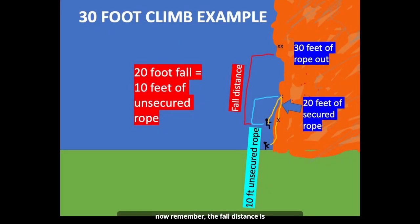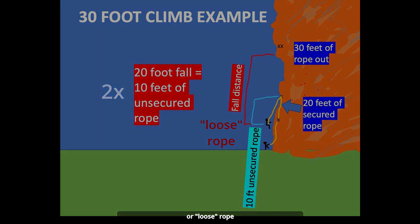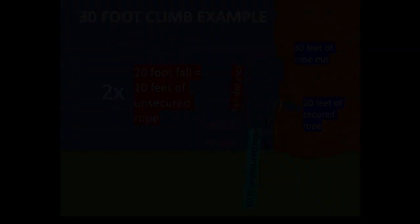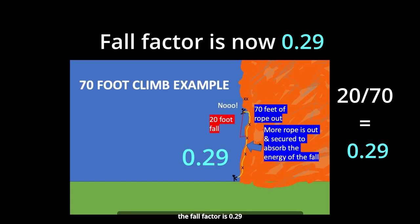Remember that the fall distance is twice the length of the unsecured or loose rope. When you do a 20-foot fall and there's 70 feet of rope out, the fall factor is 0.29. All of these numbers are below one.